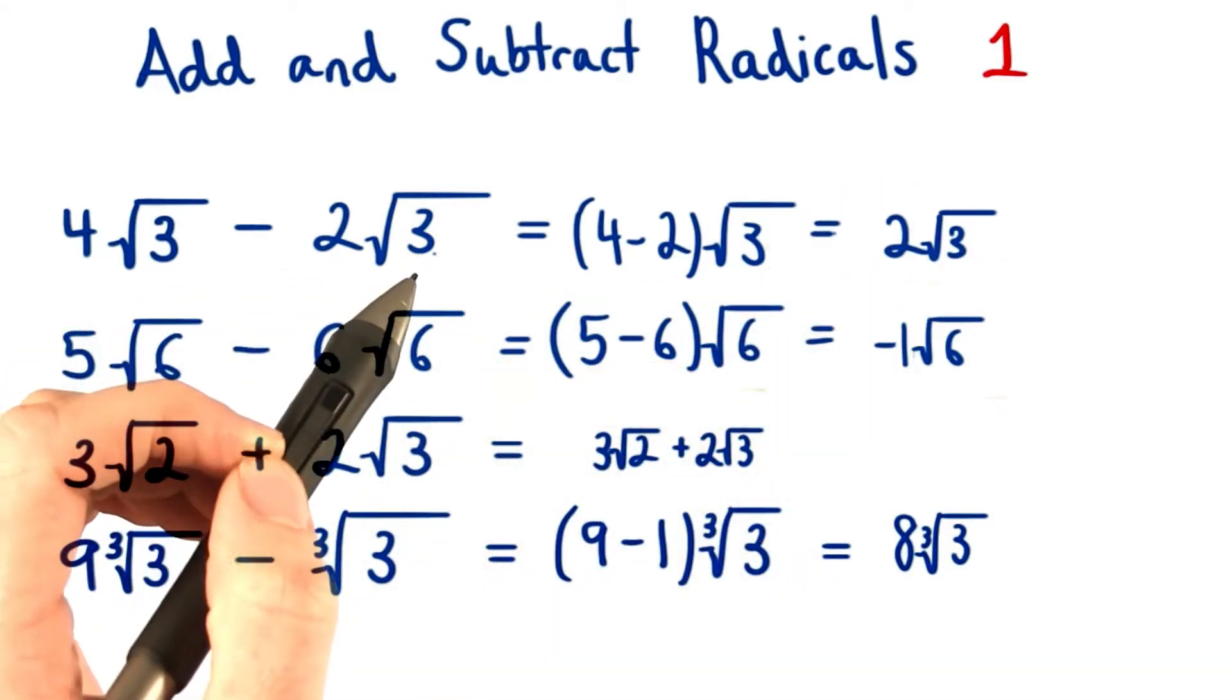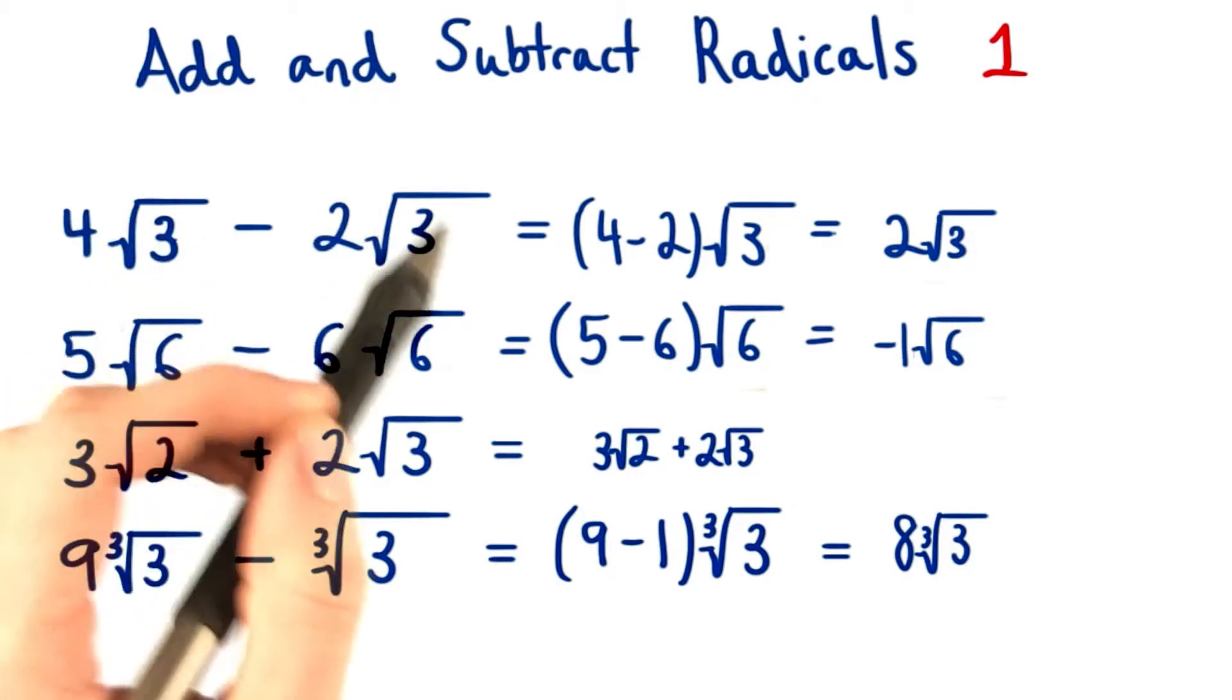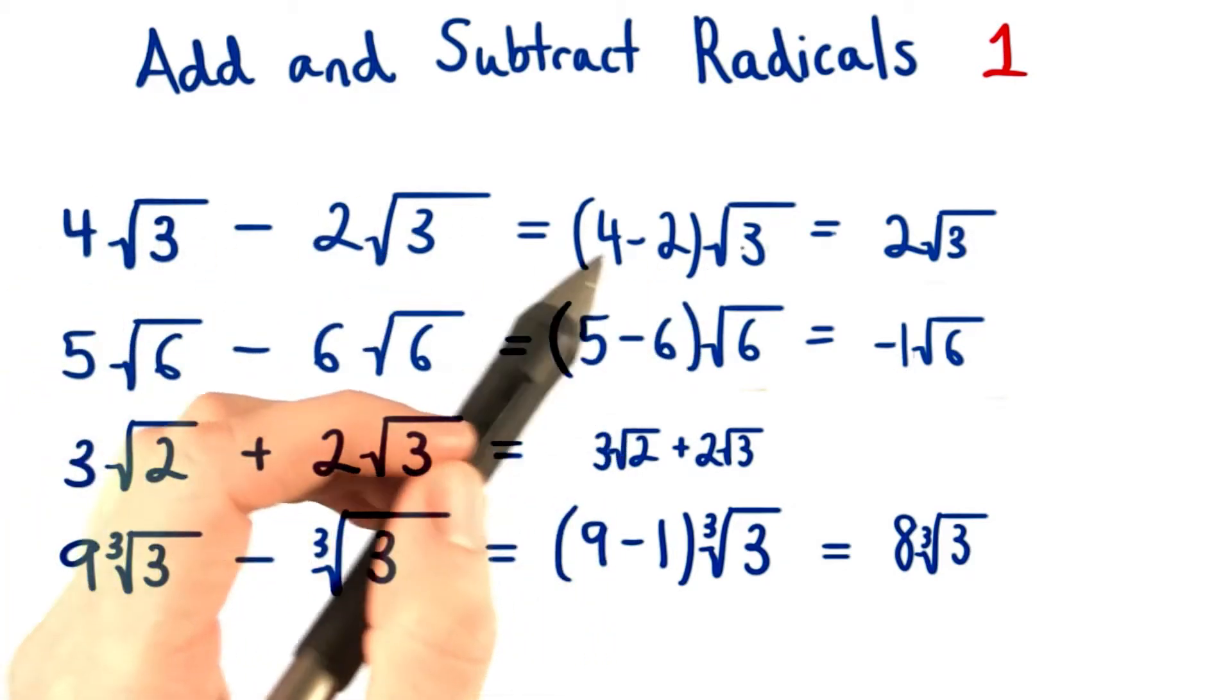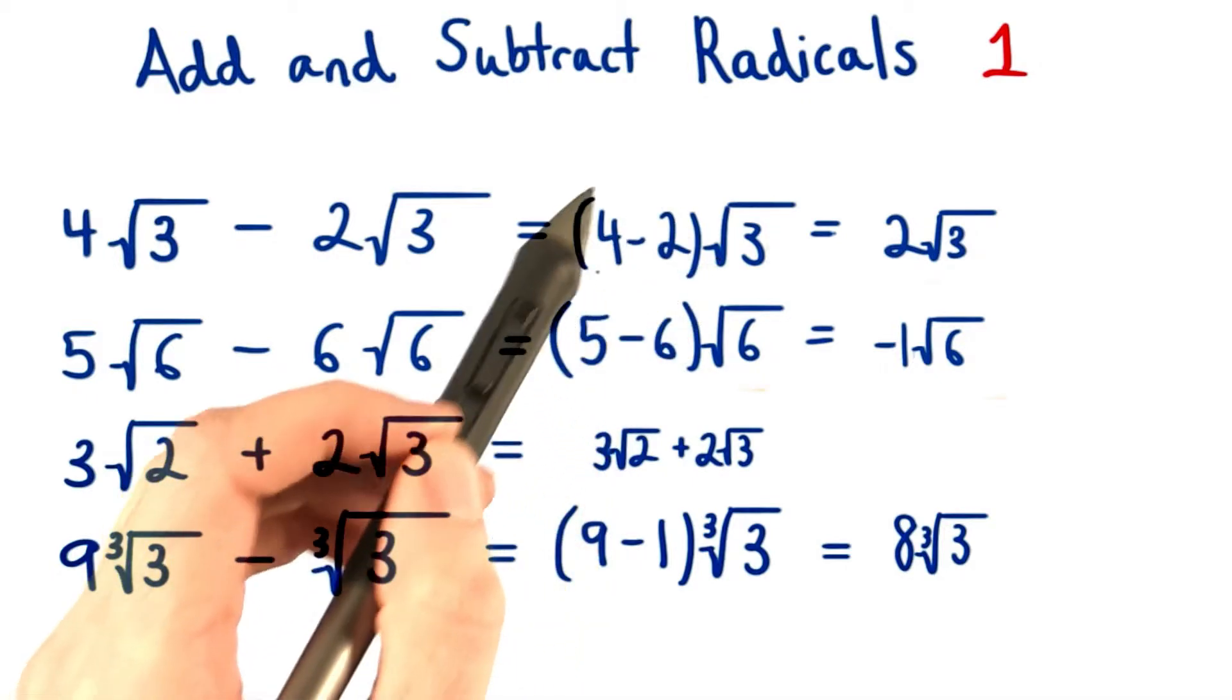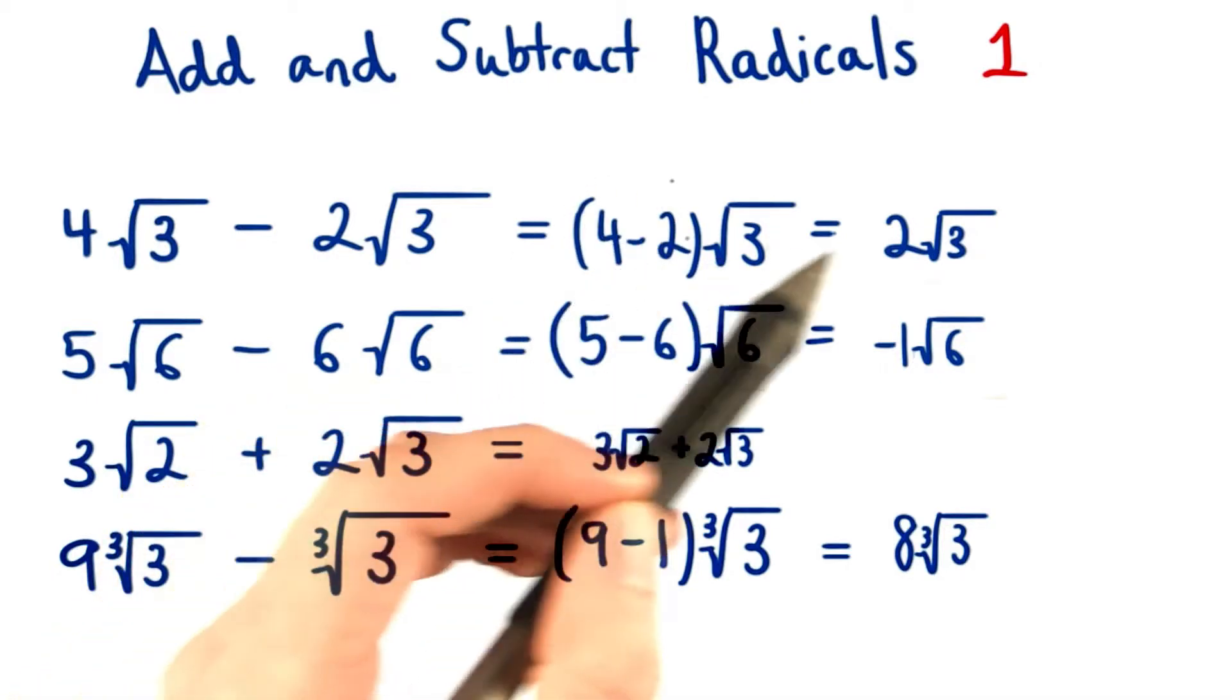We see that if we factor out a √3 from the first term and the second term, this would leave us with the quantity (4 - 2) times √3. We simplify the number in front of our radical sign to get 2.